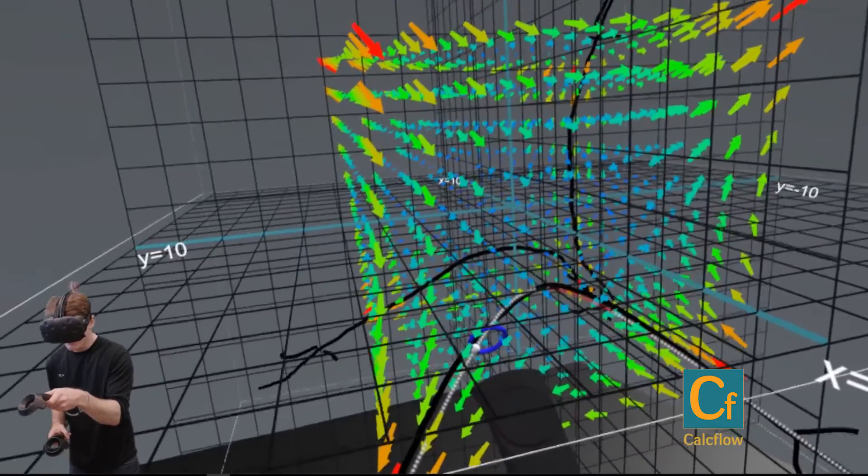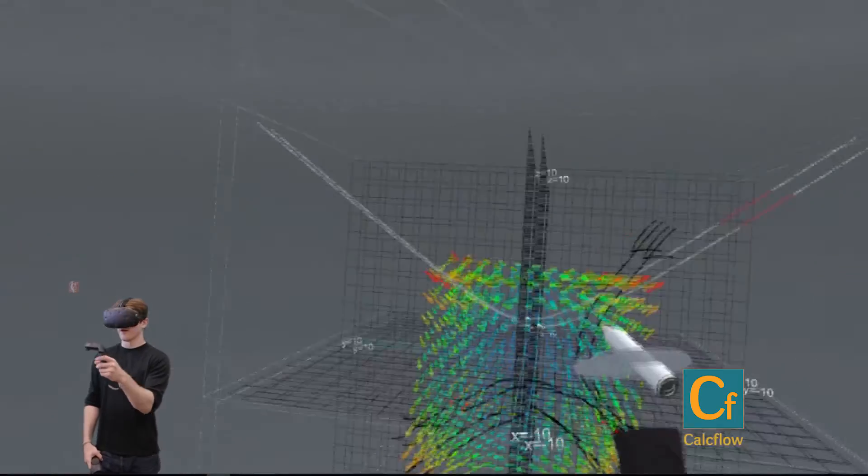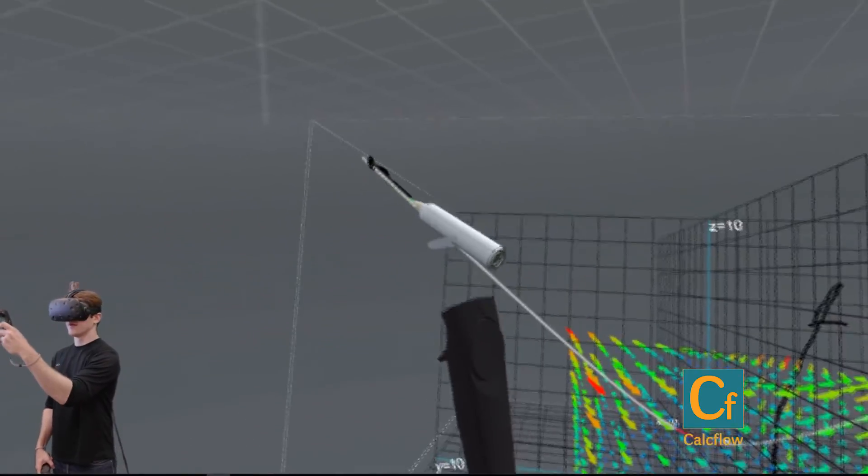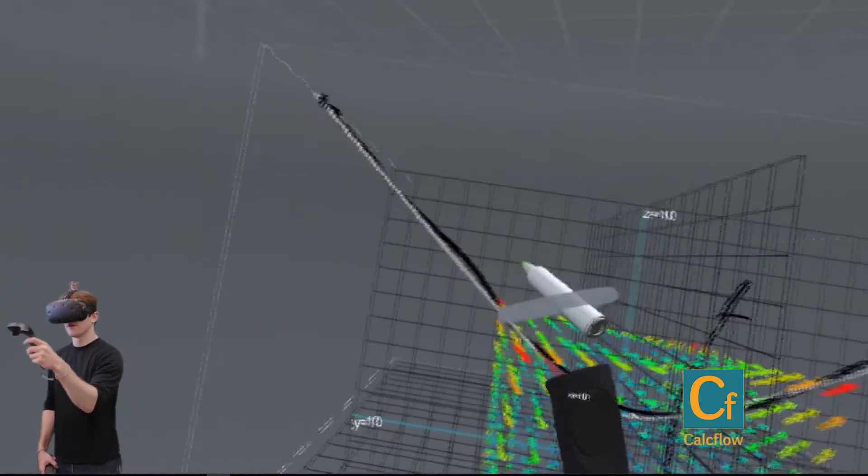And then let's move this point and now let's plot this one. We see that it would enter here and exit there.